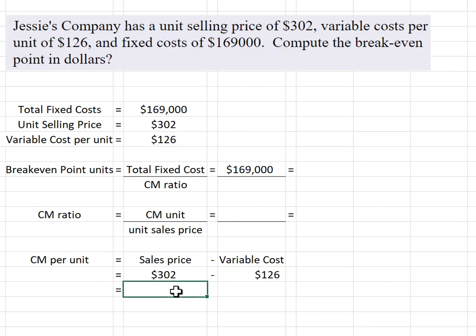If I take $302 minus the variable cost per unit $126, that's $176 contribution margin per unit. That means after they pay for the variable cost, they now have $176 for every unit sold to cover their fixed costs and net income.